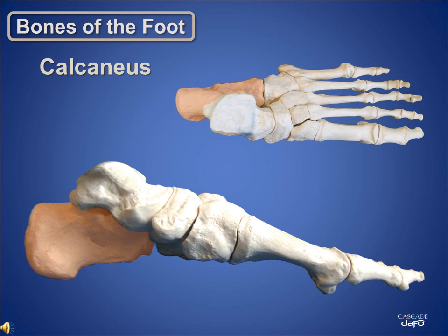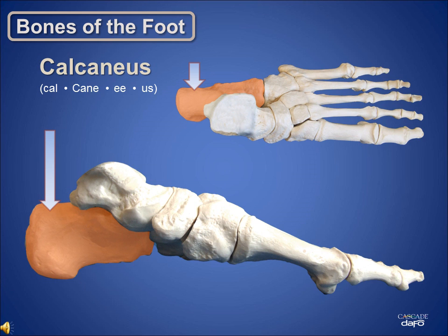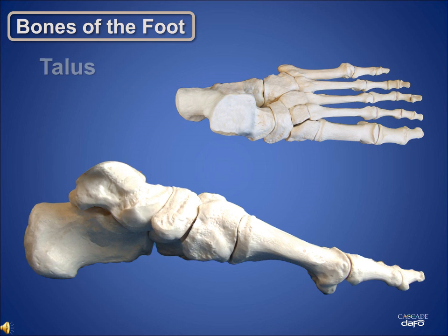This is the calcaneus. It's the largest bone of the foot, forming the heel, or hind foot. The talus sits on top of the calcaneus. The smooth top surface of the talus articulates with the tibia, and together with the fibula forms the talocrural joint, or ankle joint.